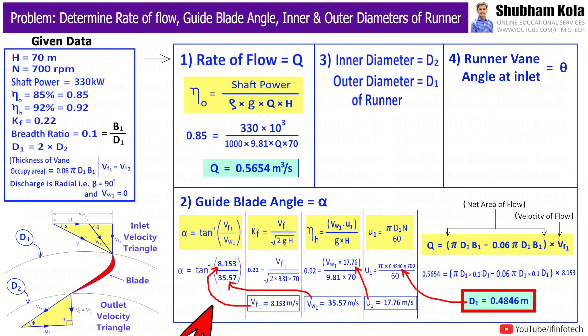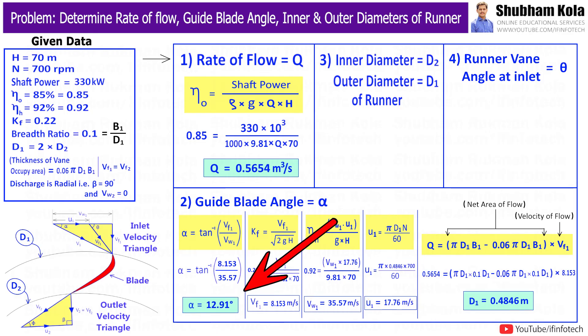With Vf1 and Vw1 found, we substitute these values and take tan inverse to solve for guide blade angle alpha = 12.91°.